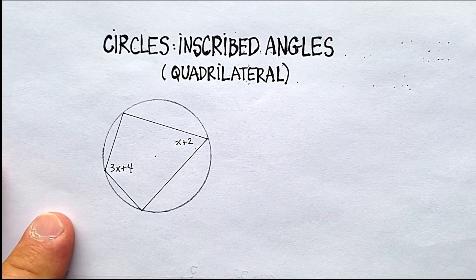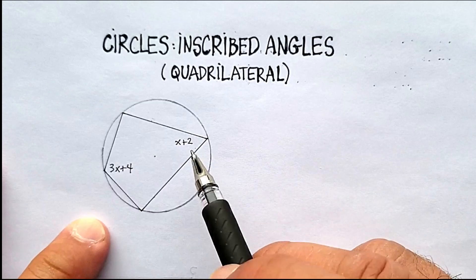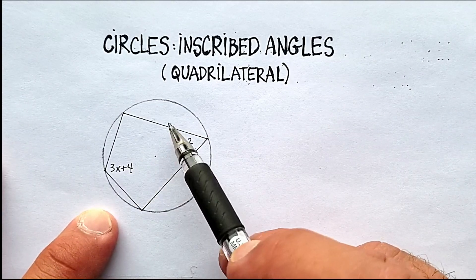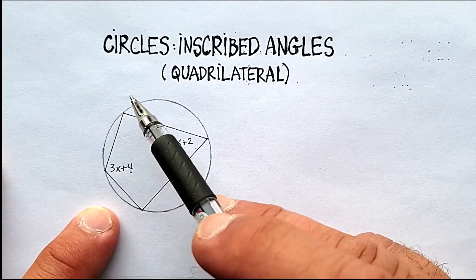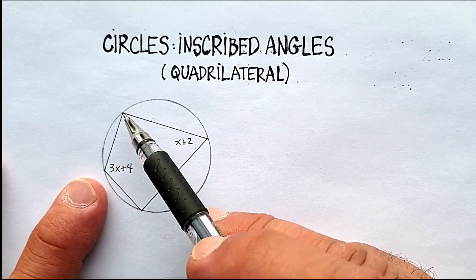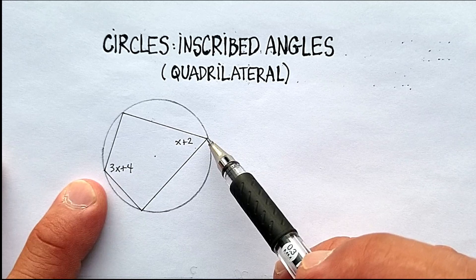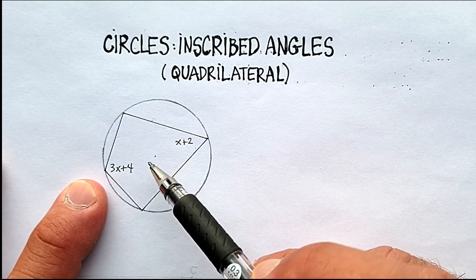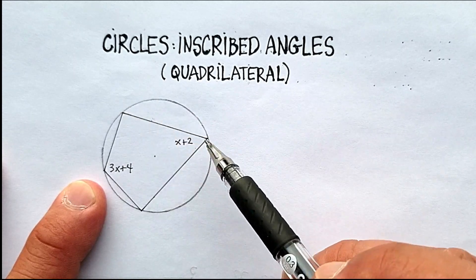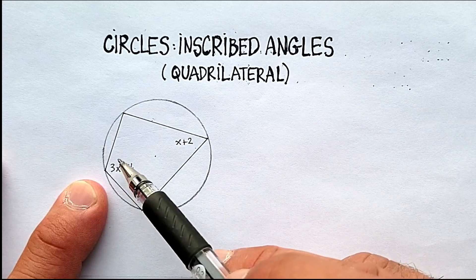In this video we're going to talk about a property of inscribed quadrilaterals in a circle. Remember that inscribed means that every vertex of the figure, in this case a four-sided figure or the quadrilateral,